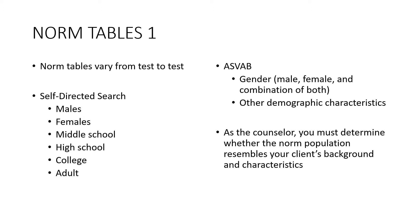A norm table varies from test to test and contains results that allow for comparison. The Self-Directed Search, for example, has a table covering male, female, middle school, high school, college, and adult groups. So if your client is a female college student, you can compare her results to that specific group. The ASVAB has tables broken down by gender and other demographic characteristics.